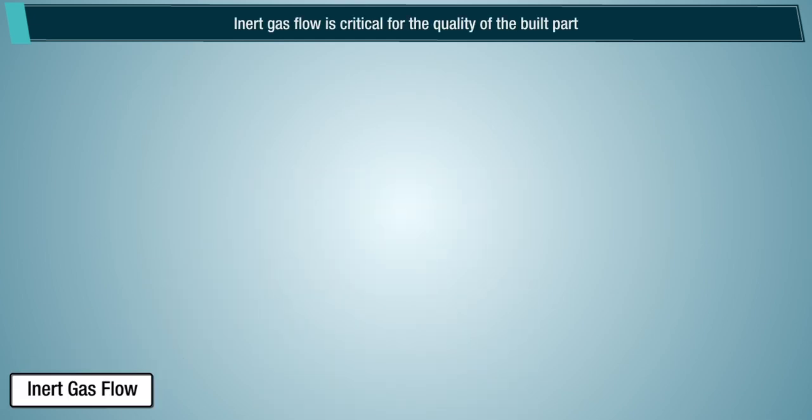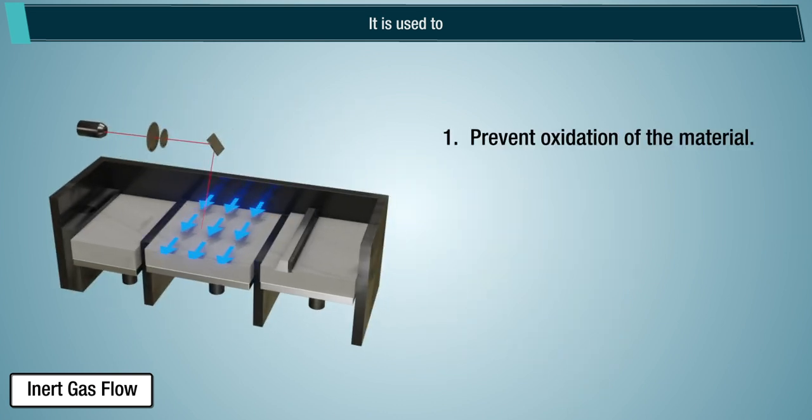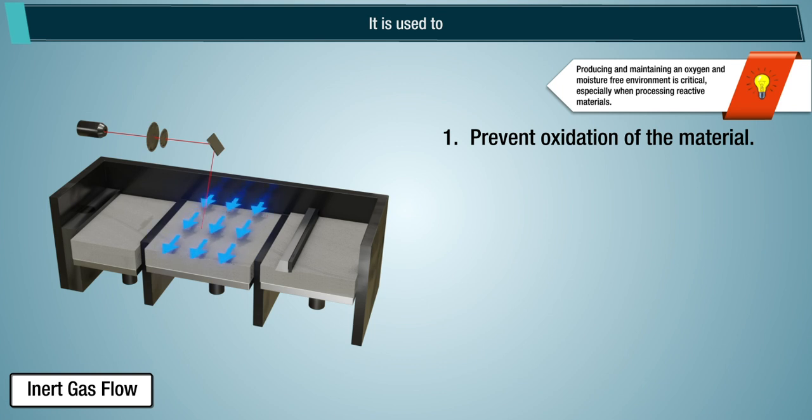Inert gas flow. Inert gas flow is critical for the quality of the built part. It is used to prevent oxidation of the material. Note: Producing and maintaining an oxygen and moisture free environment is critical, especially when processing reactive materials.